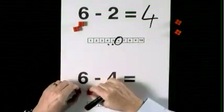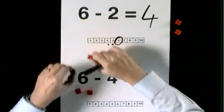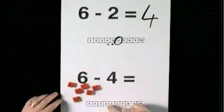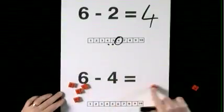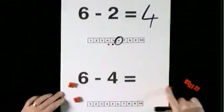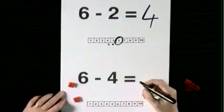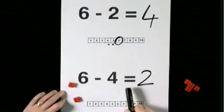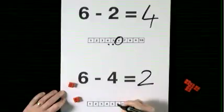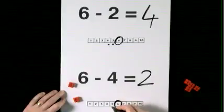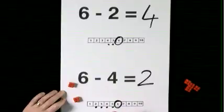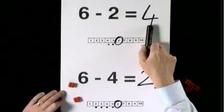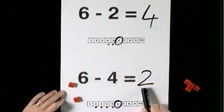Six take four. Take one, take two, take three, take four. Leaves two. Six take four makes two. Six take one, two, three, four makes two. Six take two makes four. Six take four makes two.